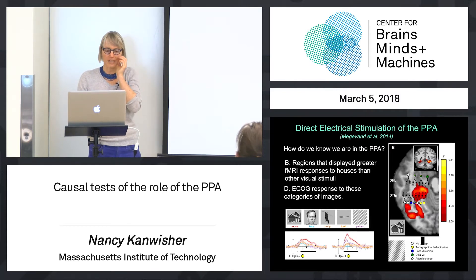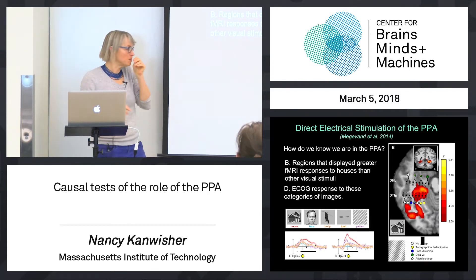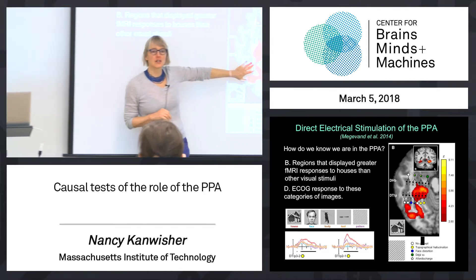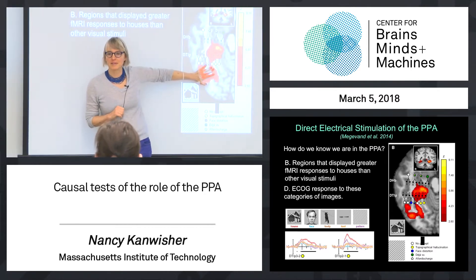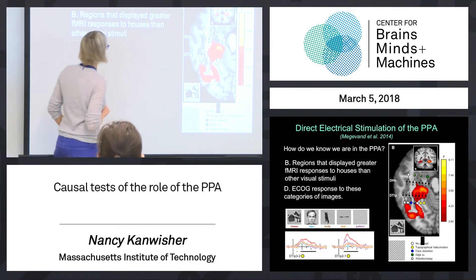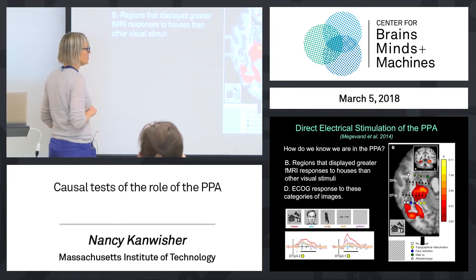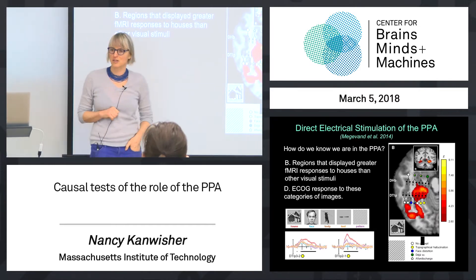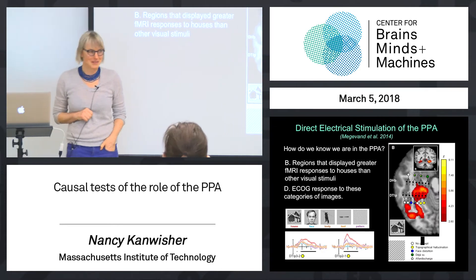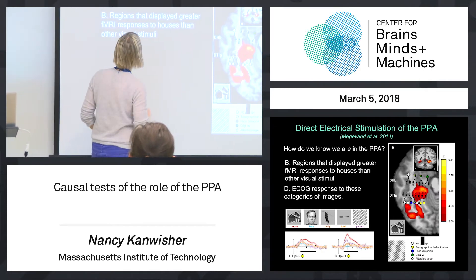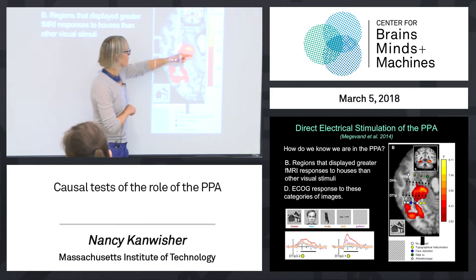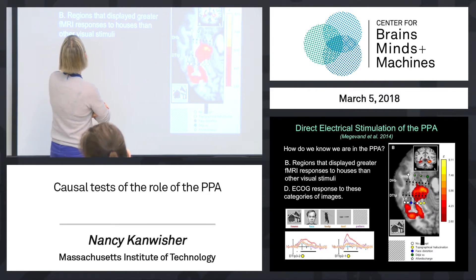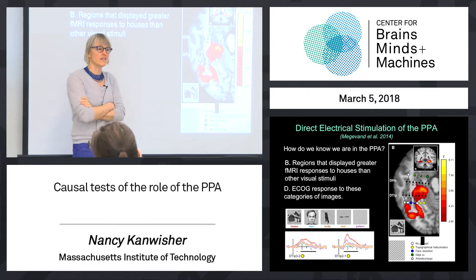The first problem you need to solve is: where are those electrodes, and how do we know that they are on top of the parahippocampal place area? So they got their patient to do a functional MRI experiment. These are brain regions that responded more to houses than other visual stimuli. You guys already know better than Megavond — if you were doing this experiment, what would you have done instead of houses? Scenes drive this region much better than houses, so he probably got the right place; he just didn't know enough to do the most powerful experiment.